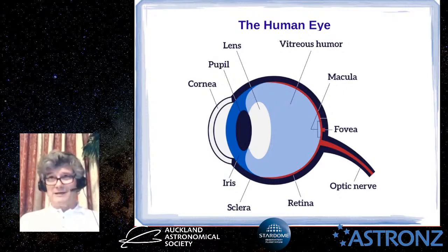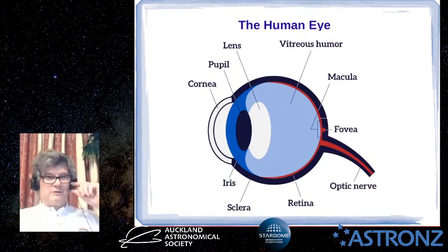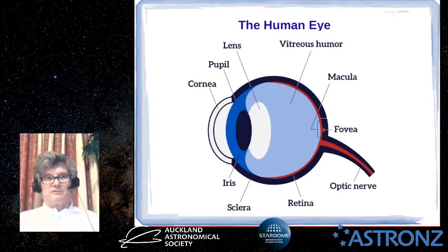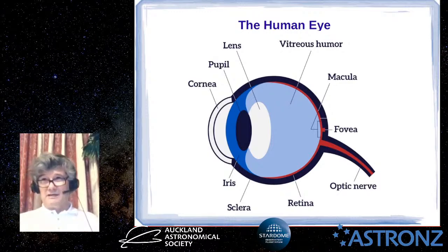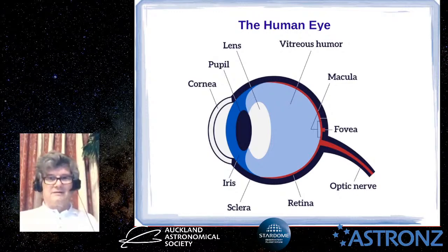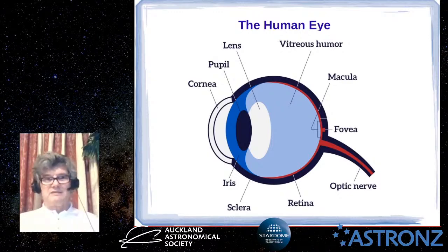The pupil is under involuntary control — if the eye detects bright light it automatically closes the pupil down, and if light levels drop it starts to open. Immediately behind the pupil is the eye lens, another refractive element used for focusing. Unlike a camera or telescope where you move the lens or eyepiece, the eye focuses by adjusting the shape of the lens.